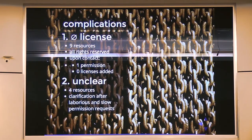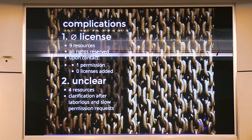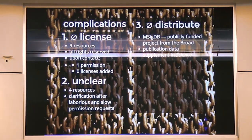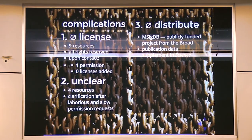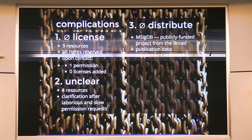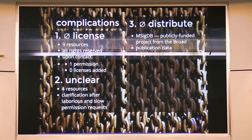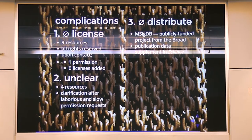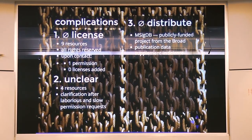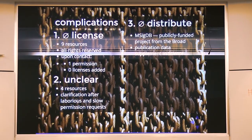We also faced unclear licenses where we had to email them for clarification, which was laborious and slow. Next, some licenses forbid redistribution — for example, MSICDB, a publicly funded project, had a very restrictive license put on it by the Broad Institute. Another big issue is reusing data from publication supplements, where authors have signed copyright transfer agreements with the journals — this is an issue I'd like to expose in the coming months.